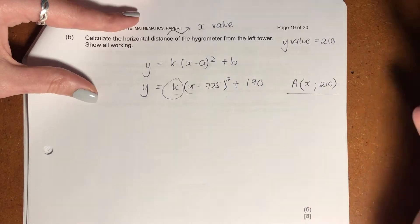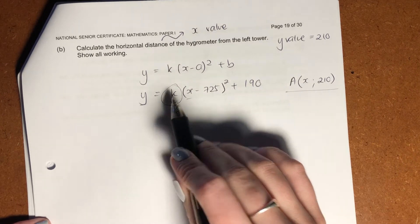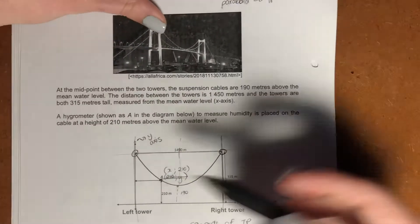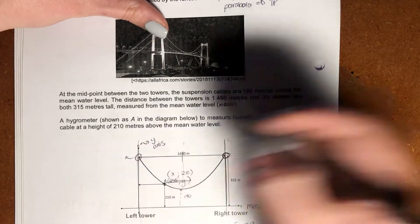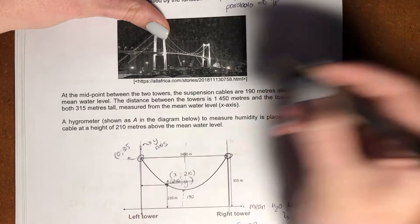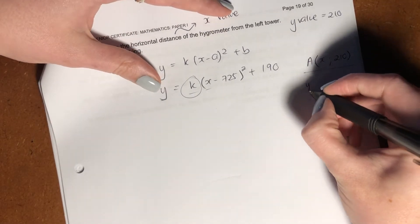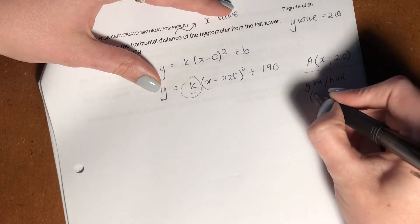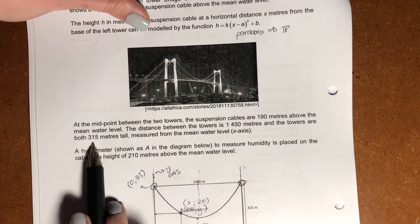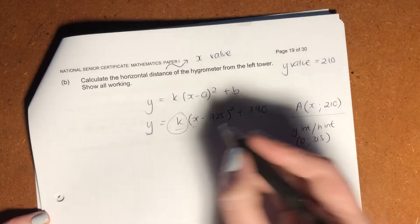Okay, so is there another variable that I can, another point that I actually know both of its coordinates so that I can solve for k? Well, yes, there is. Over here, right, this value over here, its x coordinate is going to be 0, and its y coordinate is going to be 315. Okay, because effectively, this is the y-intercept. So I'm going to go sub that in. Okay, I'm going to sub that in, and that effectively is my y-intercept, or you can call it your h-intercept, right? Where it's 0 and 315. How do we know it's 315? Well, it said both of the towers are 315 meters tall, measured from the mean water level. So we do have another coordinate there that it goes into. So let's sub that in.